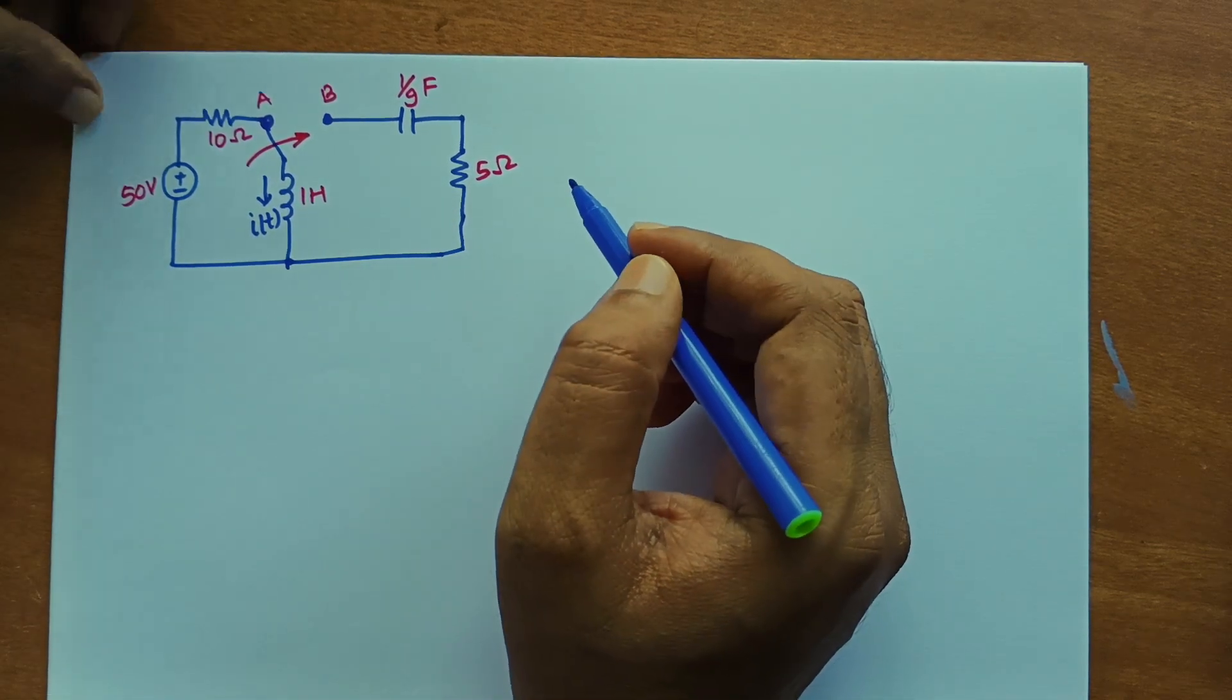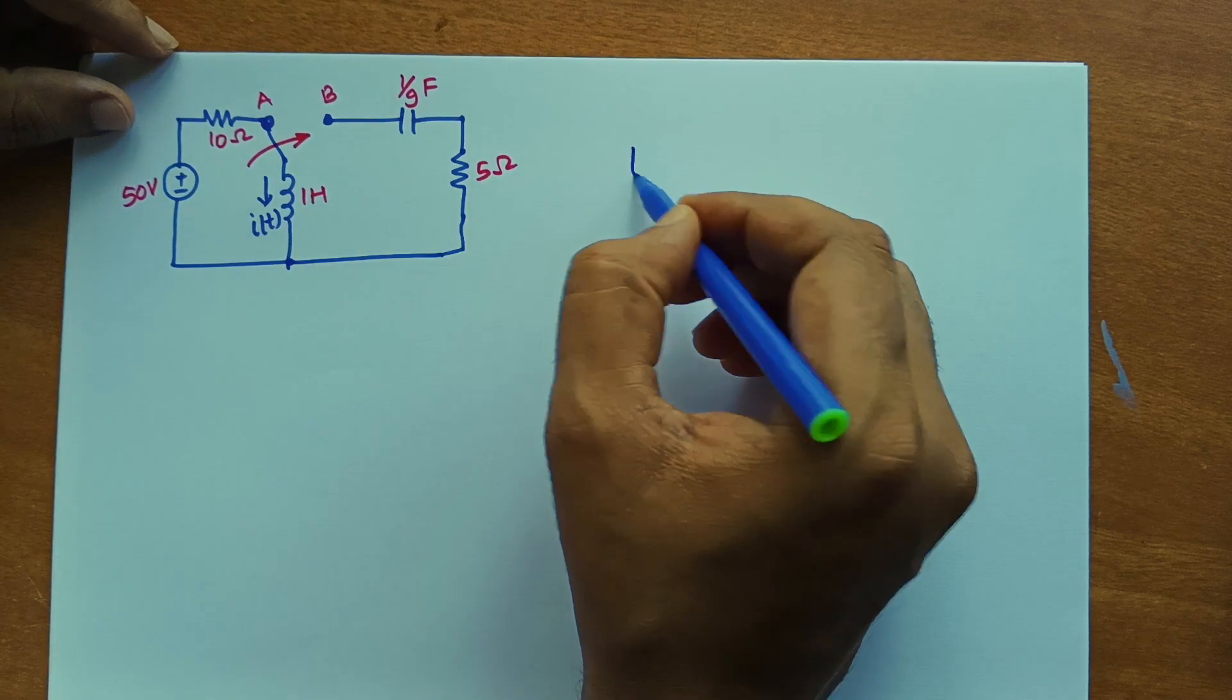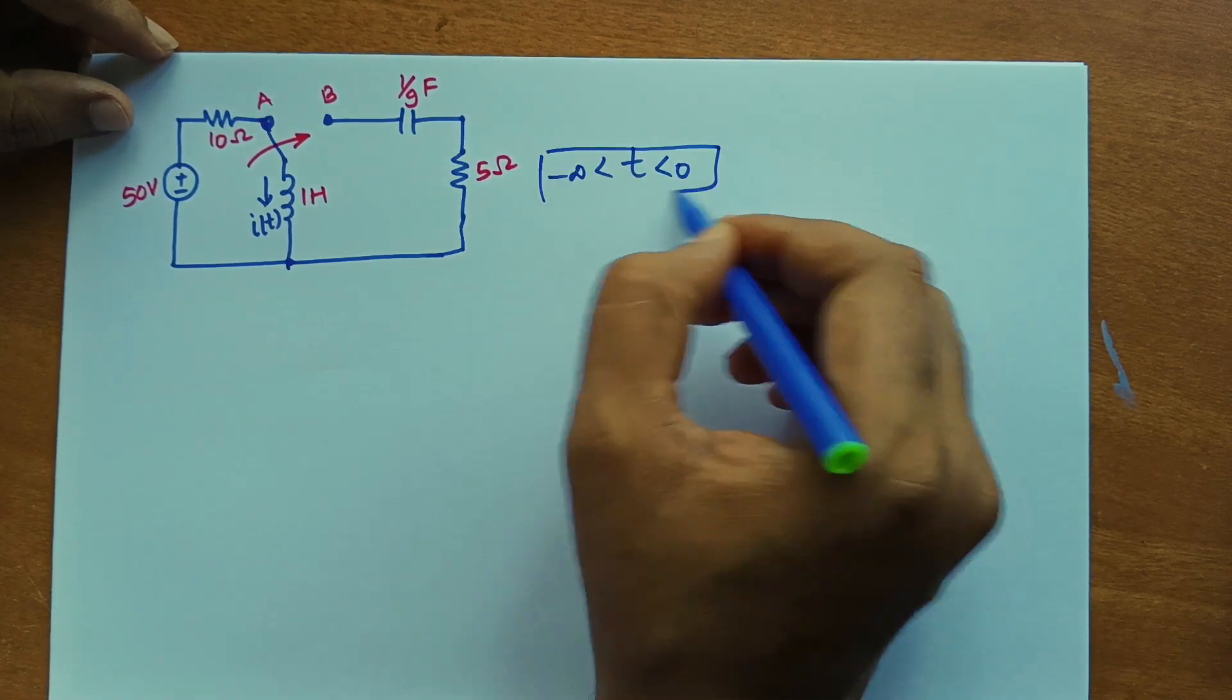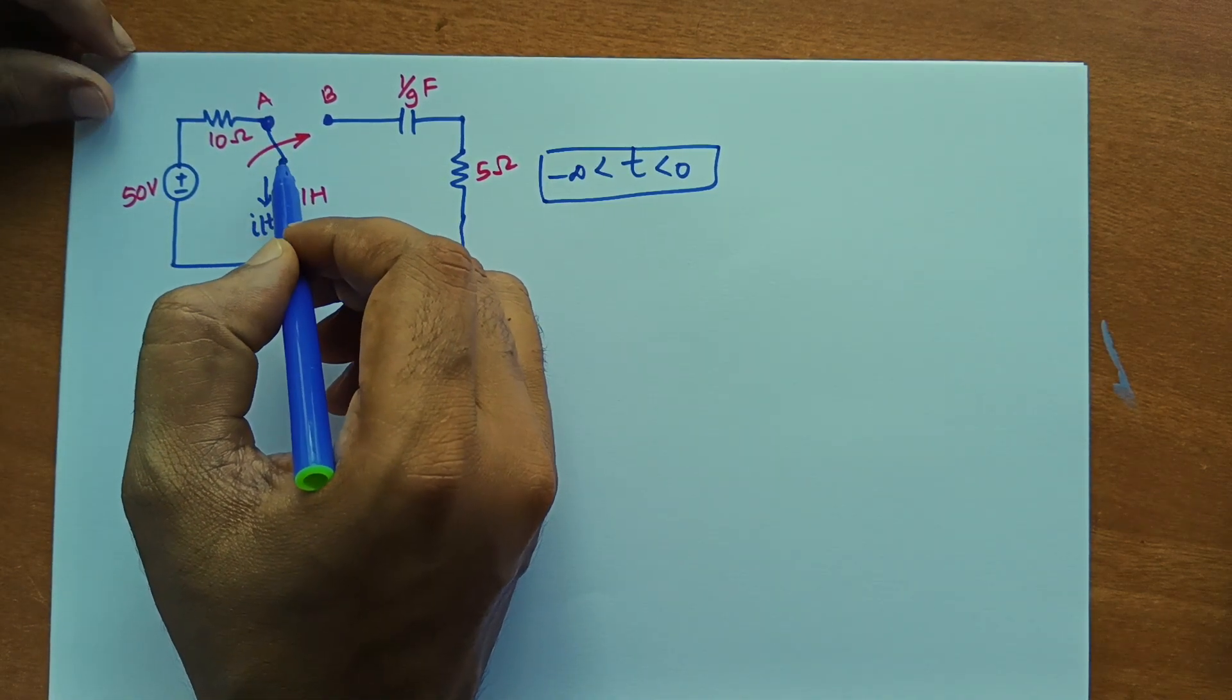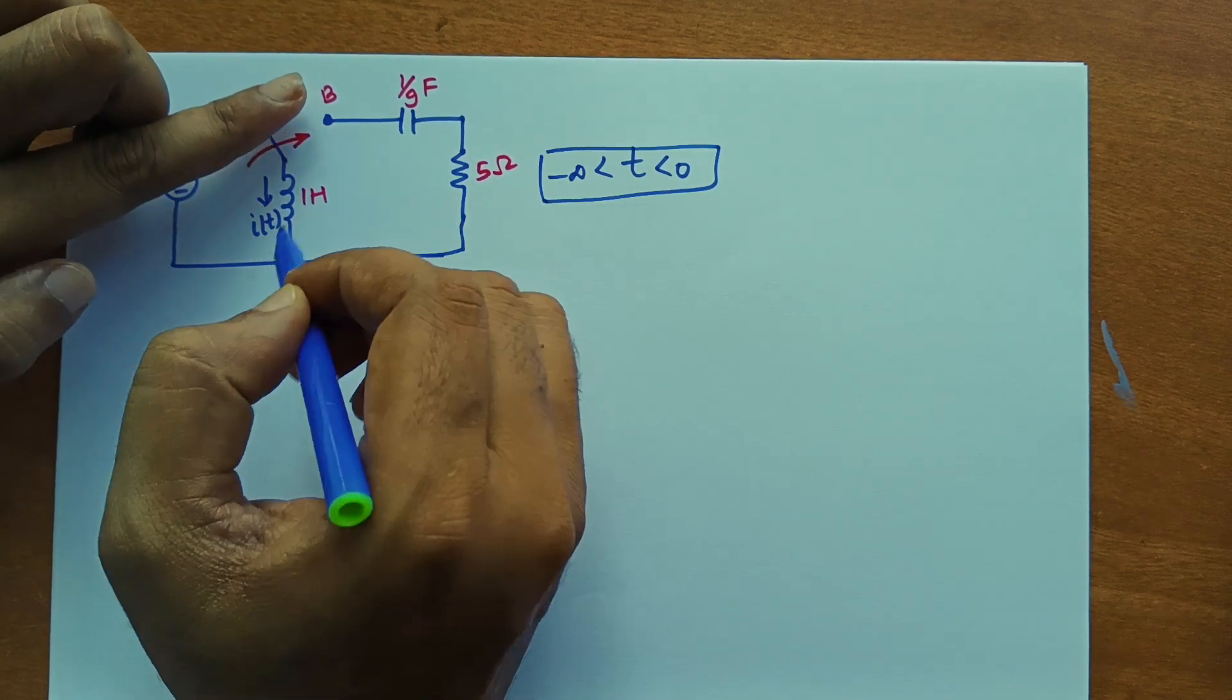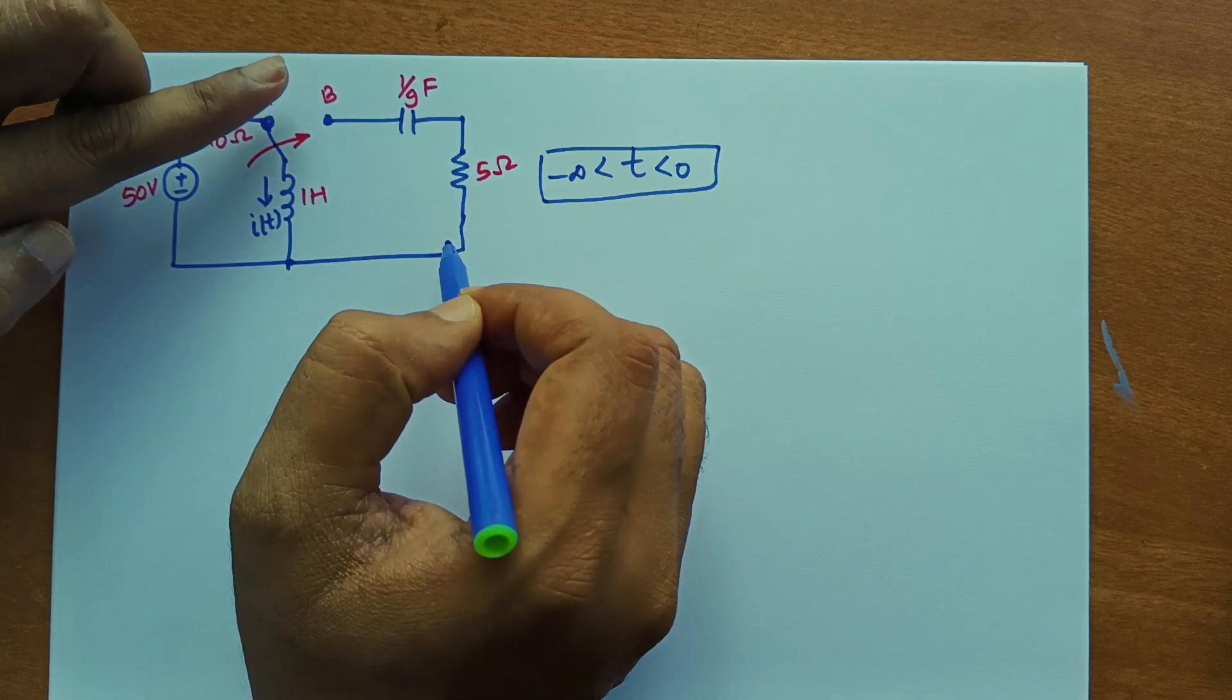first of all what we need to apply is original position of switch that means for time minus infinity to 0. The position of switch will be at A and exactly at t equal to 0 it will switch to B. So as soon as it move to B, it will become series L, C and R. So series RLC circuit.